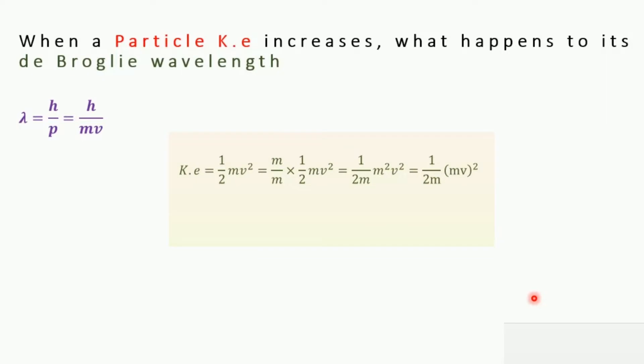We know that kinetic energy equals 1/2 mv squared. We're going to play with this equation by multiplying and dividing it by m. We'll get 1/2 m times m squared v squared, which equals 1/2 m times (mv) squared.